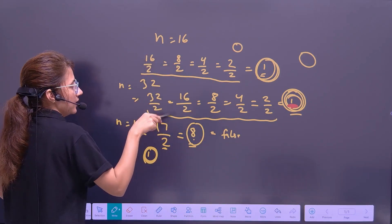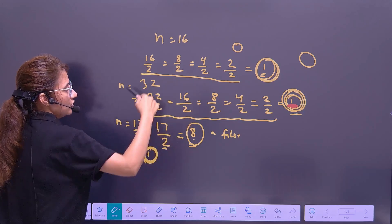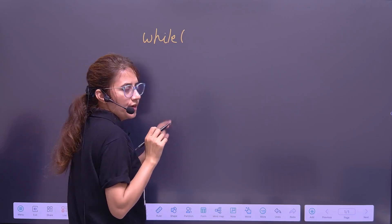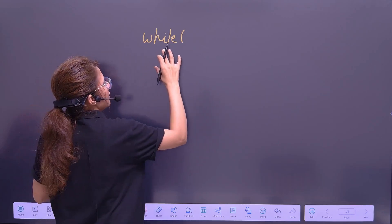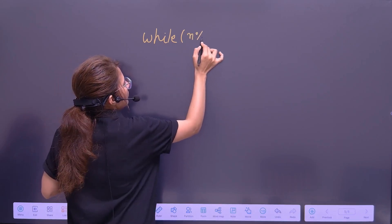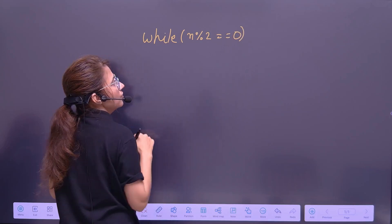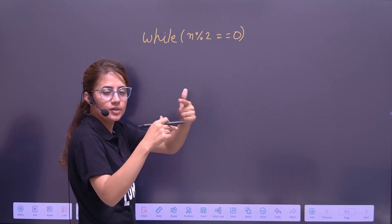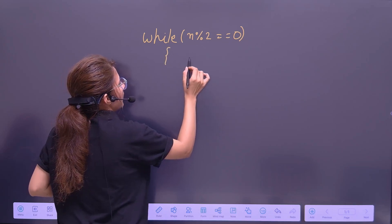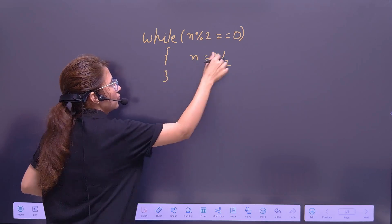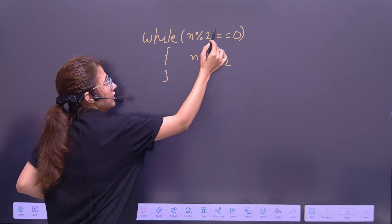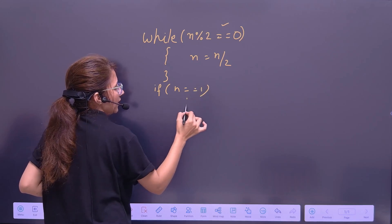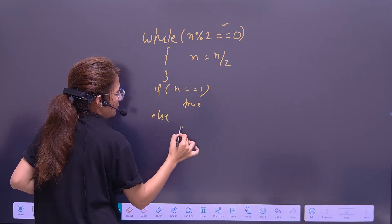How do you represent this logic in your program? We can write something like this. While n mod 2 equals 0, keep dividing — n = n / 2. Till the remainder is 0, we keep dividing. If this condition becomes false, then check: if n equals 1, return true. Otherwise return false.